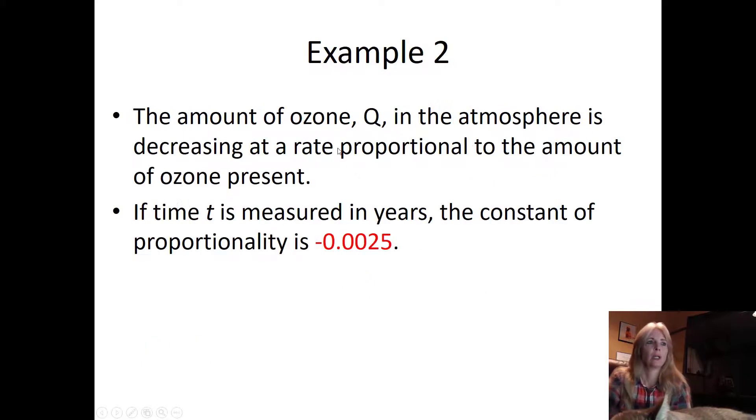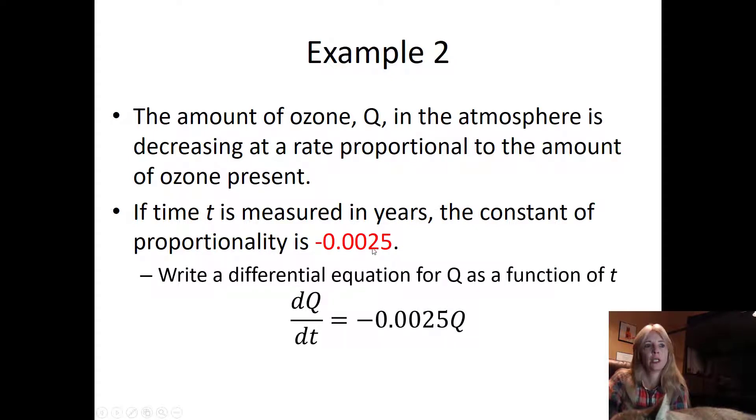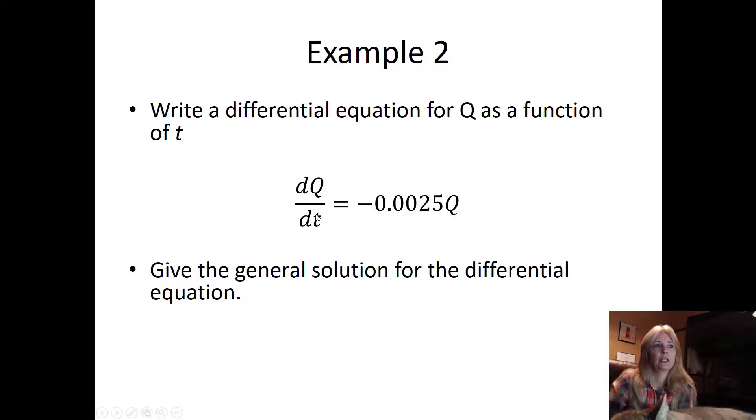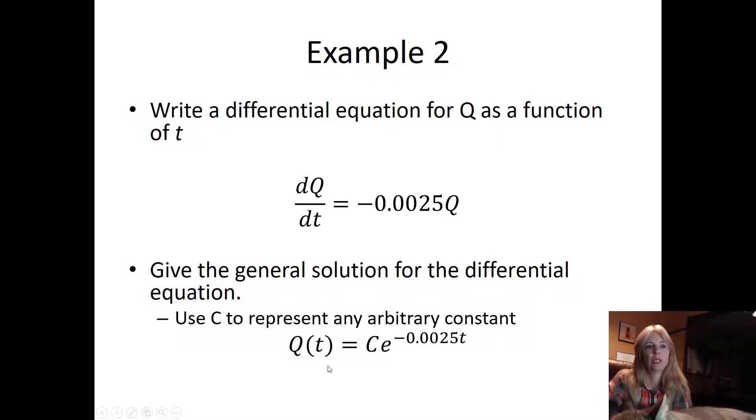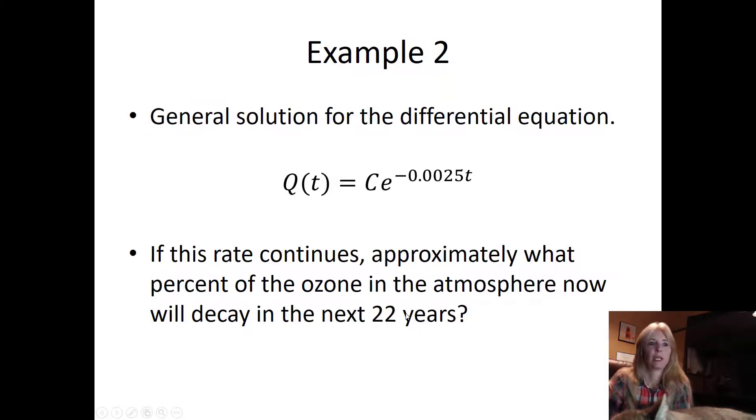The amount of ozone Q in the atmosphere is decreasing at a rate proportional to the amount of ozone present. I already know it's going to be in this form. If time t is measured in years, the constant of proportionality is this negative value because it is decreasing. I can write my differential equation: this is my constant of proportionality times the quantity at a particular time. Now I can use this to write the general solution, Ce^(kt). I use C to represent any arbitrary constant, and here's my e^(kt), so I plug in my k and that's my value.